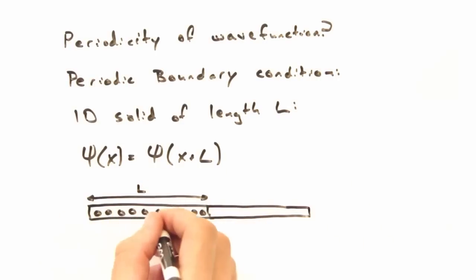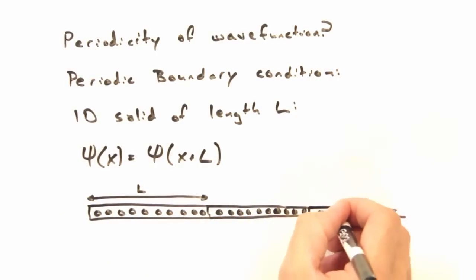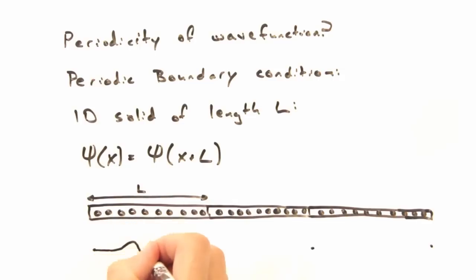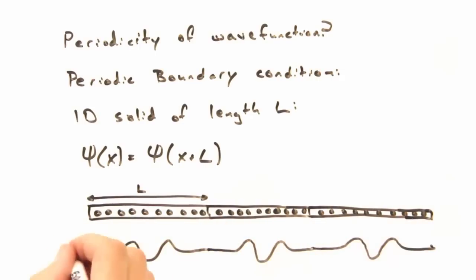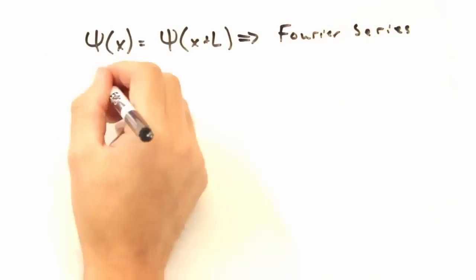So if we have a one-dimensional chain of atoms of length l and invoke periodic boundary conditions, the wave function will have to repeat itself every length l. So then we can rewrite psi as a Fourier series too.